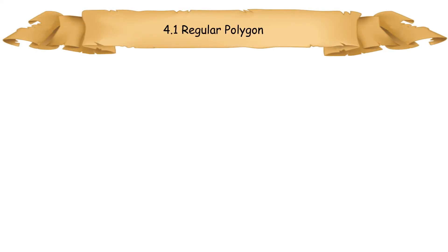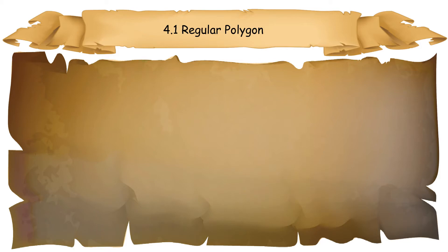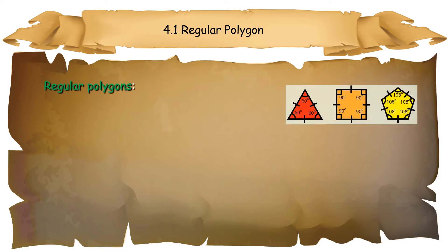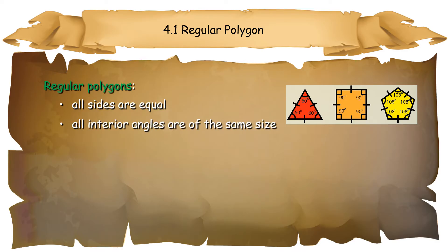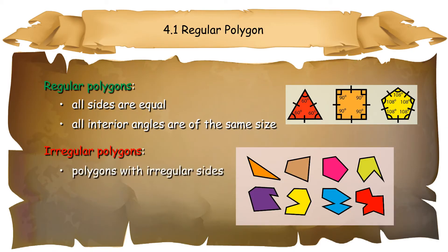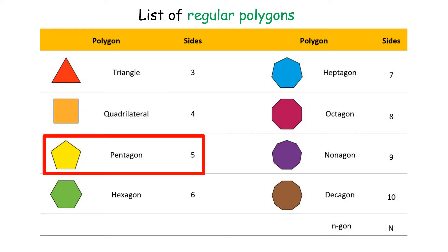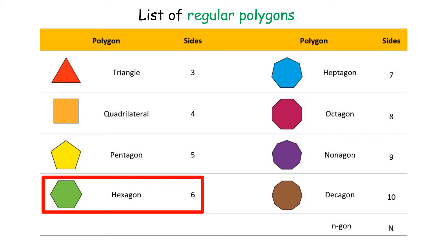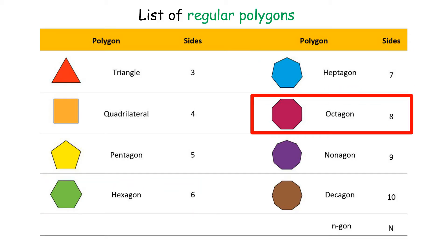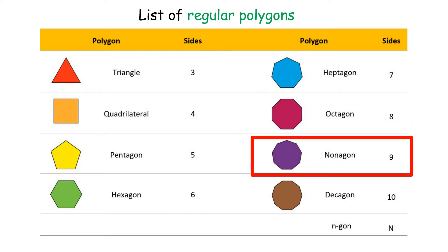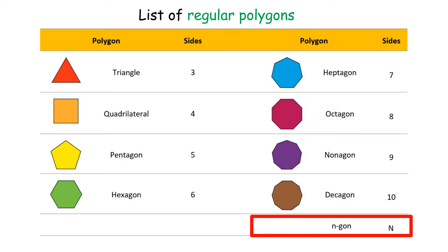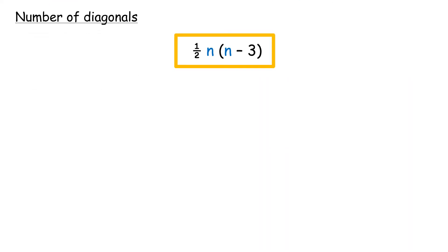4.1 Regular Polygon. Geometric Properties of Regular Polygons: Regular polygons are polygons for which all sides are equal and all interior angles are of the same size. Irregular polygons are polygons with irregular sides. The number of diagonals equals half N times (N minus 3), where N equals the number of sides.